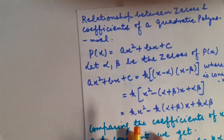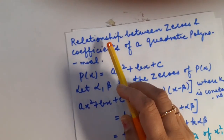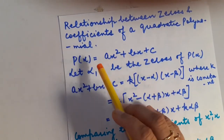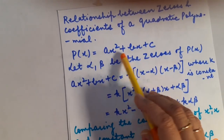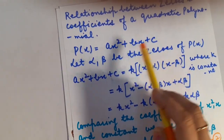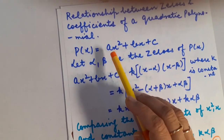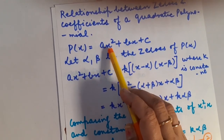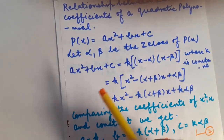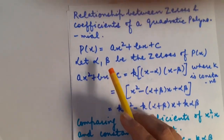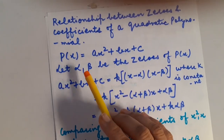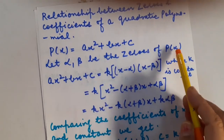Before I switch to exercise 2.2, let us quickly recall the relationship between the zeros and the coefficients of a quadratic polynomial. P(x) — the generalized form is Ax² + Bx + C, where A and B are the numerical coefficients of x² and x respectively, and C is the constant value. For a quadratic polynomial, there will be two zeros. So let alpha and beta be the zeros of the polynomial in x.